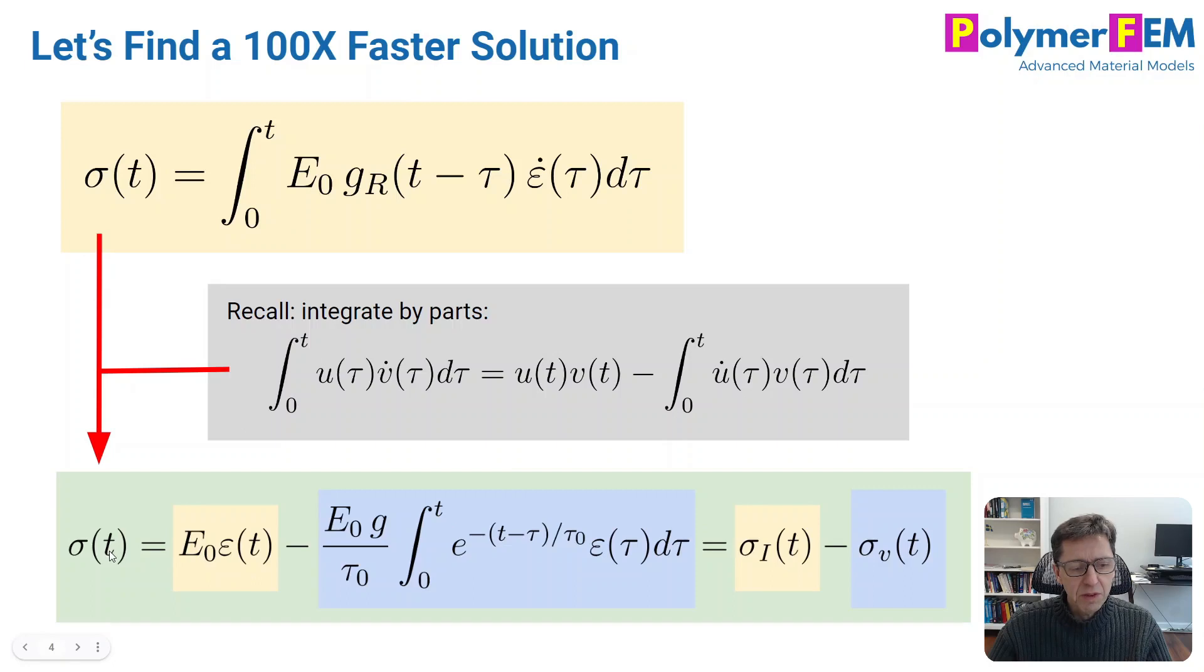The stress at the given time point becomes an instantaneous stress that's given by E0, the stiffness at time zero, minus a viscous contribution. So instantaneous response, and if you do it a little slower, there will be some viscous relaxation that occurs, and this is given by this equation. The integral is over time, and the value here is strain as a function of time, and this is this exponentially decaying function.